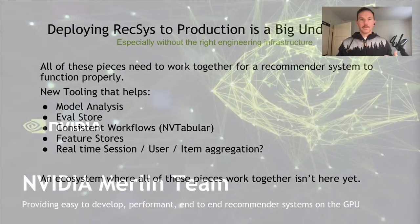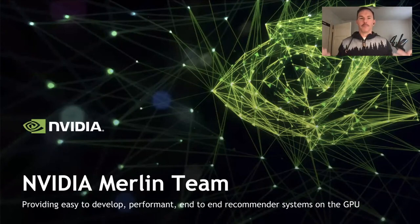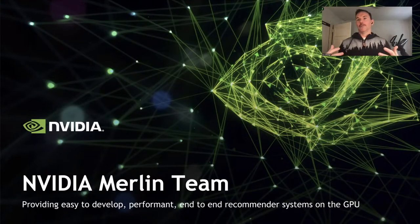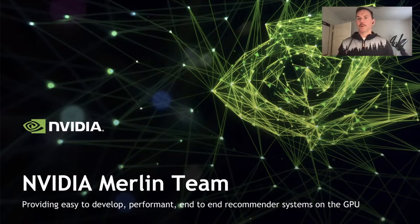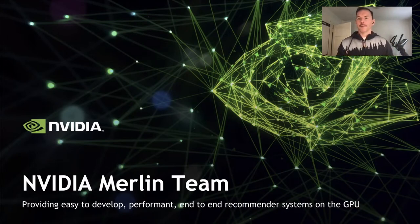My team at NVIDIA is called the Merlin team. Our goal is providing performant end-to-end recommender systems on the GPU. We want all these stages to work well on the GPU. Right now it's incredibly complex to build even part of these systems. There are ways to design the APIs to make it simpler while making it more performant and end-to-end. We're thinking about how to build tools that interoperate in the ecosystem — not just for data scientists training models, but for ML engineers deploying models into production.